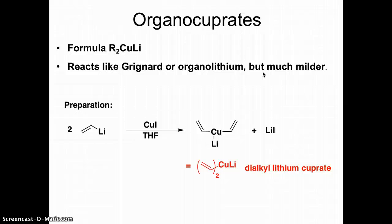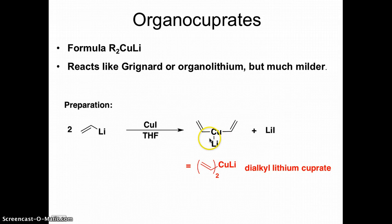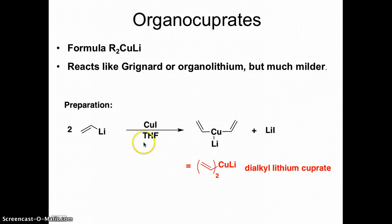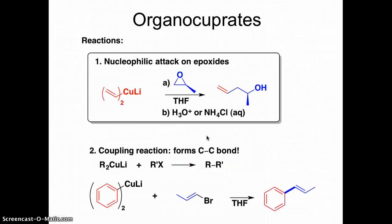The last type of organometallic reagent I want to talk about is an organocuprate — also called a Gilman reagent. It reacts just like a Grignard or organolithium reagent, but it's much milder, meaning the electronegativity difference between carbon and copper is a lot smaller. We form these from an organolithium reagent mixed with copper iodide in THF, an ethereal solvent. Even though two carbon groups are attached, only one actually transfers and acts as a nucleophile.